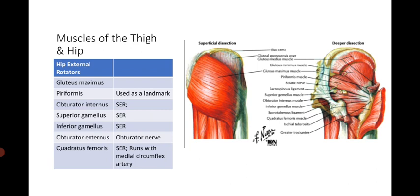For the hip external rotators, the more superficial one is the gluteus maximus, while the short external rotators include the obturator internus, superior gemellus, inferior gemellus, and quadratus femoris. An important thing to note about the piriformis is that it's used as a landmark for the sciatic nerve, which usually crosses inferior to the piriformis muscle.